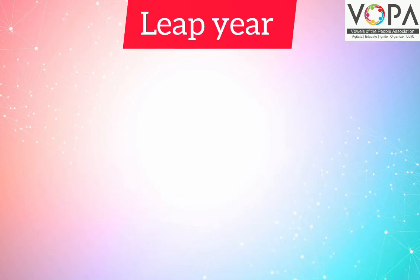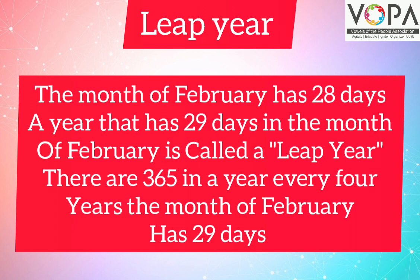Leap Year. The month of February has 28 days. A year that has 29 days in the month of February is called a leap year. There are 365 days in a year. Every 4 years, the month of February has 29 days.